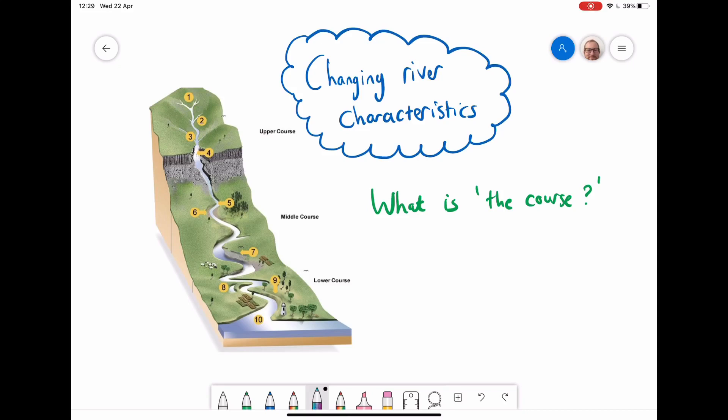Today I'm going to talk about how a river changes its characteristics from source to mouth. I'm going to start off with what is the course. So the course is simply the path that the river takes from source to mouth.